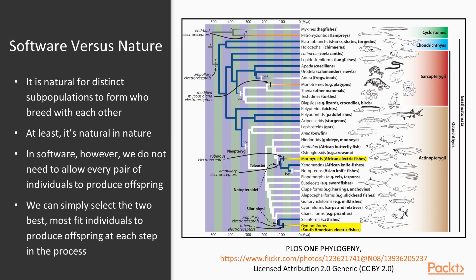In software simulations of evolution, however, we don't really need or want subpopulations. So we don't simulate all individuals breeding at each time step. Instead, we pick the top two individuals and produce an offspring, and then repeat — find the top two individuals again — and so on until we feel like stopping.